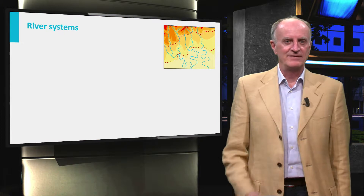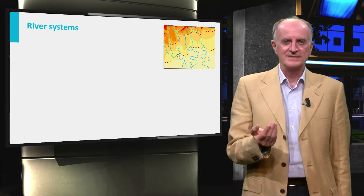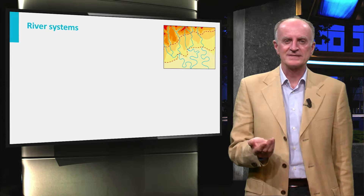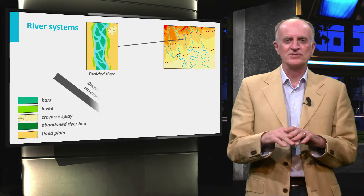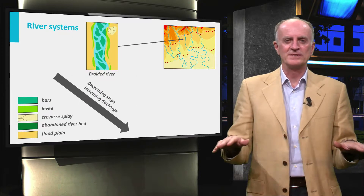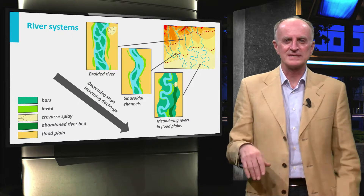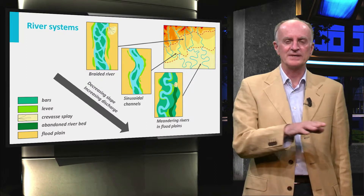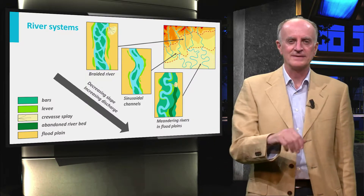Having left the steep mountain valleys and having dumped sediments in building an alluvial fan, rivers enter now gently sloping regions, forming braided river systems and eventually start meandering in large alluvial plains.